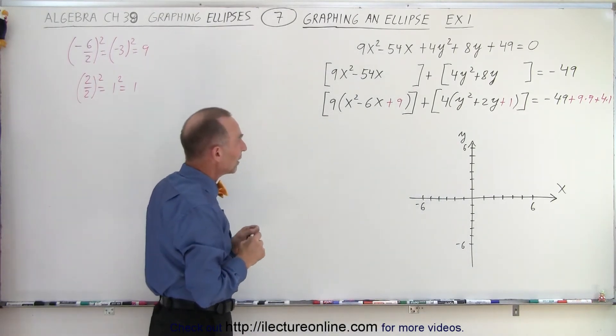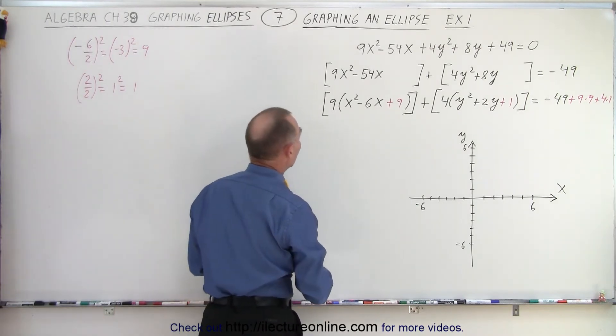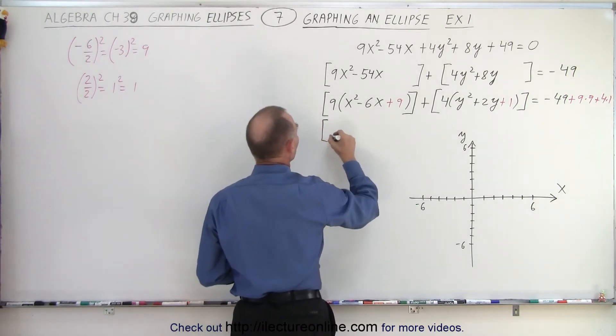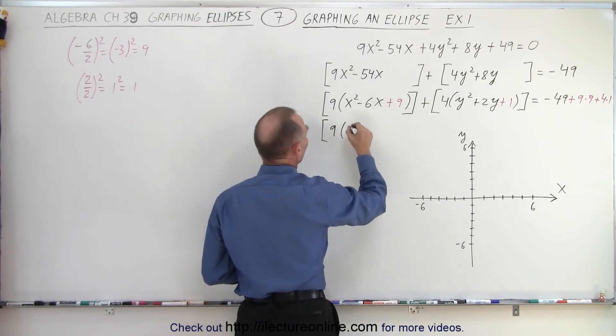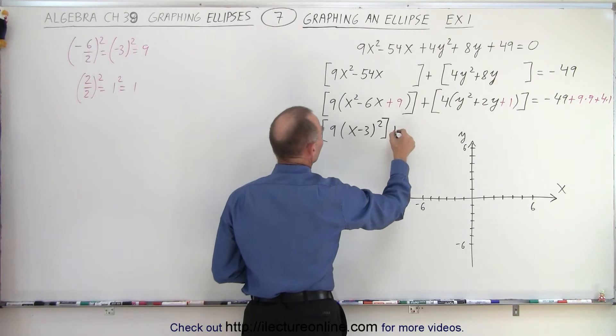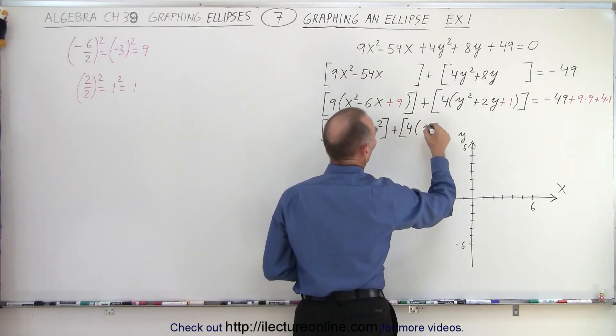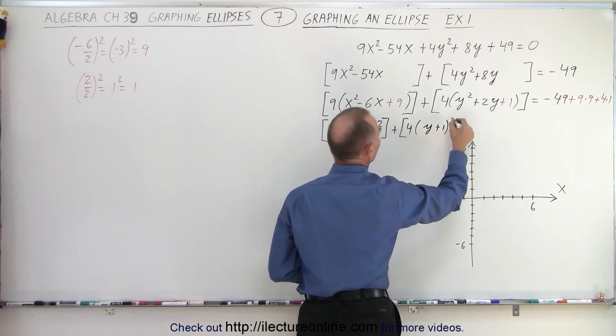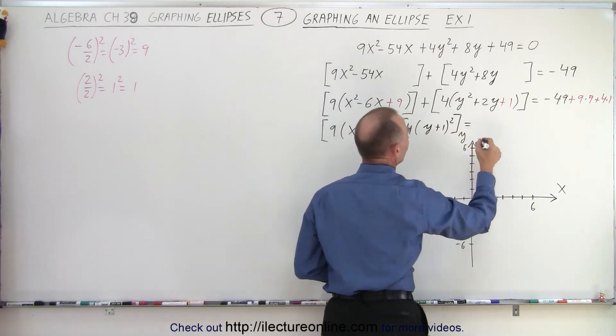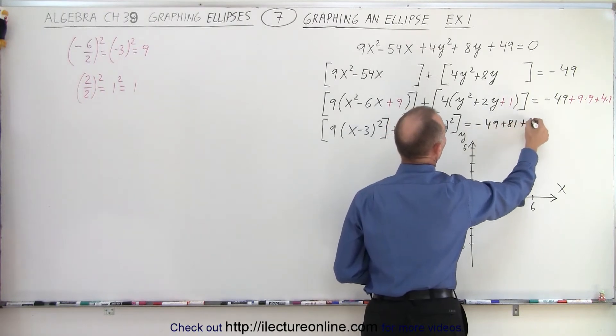Okay, so now we can go ahead and factor that. So this can be written as 9 times x minus 3 quantity squared plus 4 times y plus 1 quantity squared is equal to minus 49 plus 81 plus 4.